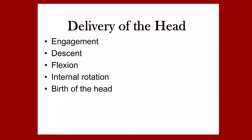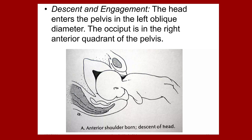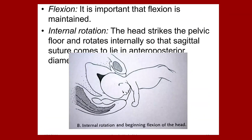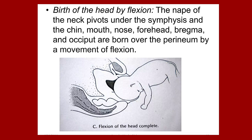In the delivery of the head, the following movements take place: engagement, descent, flexion, internal rotation, and birth of the head. The head enters the pelvis in the left oblique diameter and the occiput is in the right anterior quadrant of the pelvis. Flexion is maintained. The head strikes the pelvic floor and rotates internally so the sagittal suture lies in the anterior-posterior diameter. By flexion, the nape of the neck pivots under the symphysis and the chin, mouth, nose, forehead, bregma, and occiput are born over the perineum.